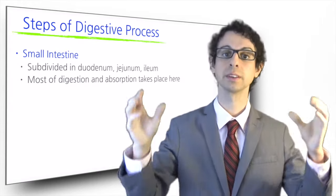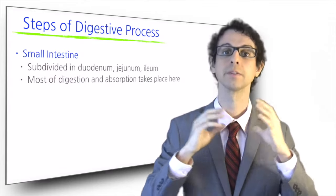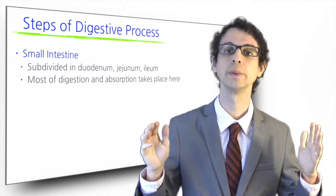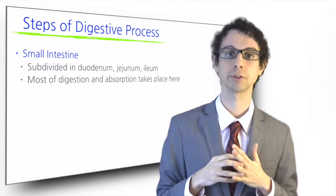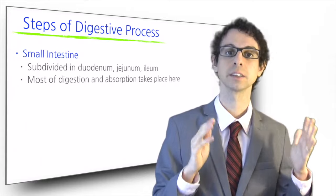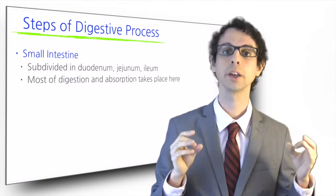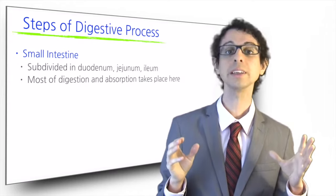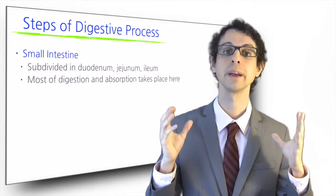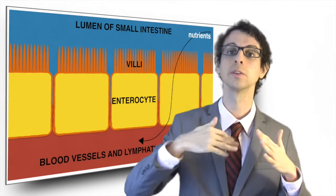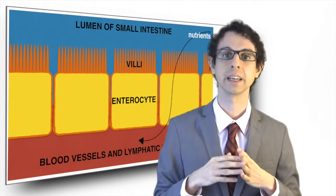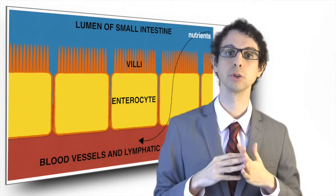The name 'small' refers to its diameter, which is narrower compared to that of the large intestine, but definitely not to its length. The small intestine is a long tube that takes up six of the seven meters of our GI tract. We can divide the small intestine into three distinct sections based on the different tasks they accomplish: the duodenum, the jejunum, and the ileum. The small intestine is where most food digestion and absorption take place. Its inner walls are made of thousands of small projections called villi, which dramatically increase the surface area of its lining, and it is where the vast majority of nutrients are absorbed.